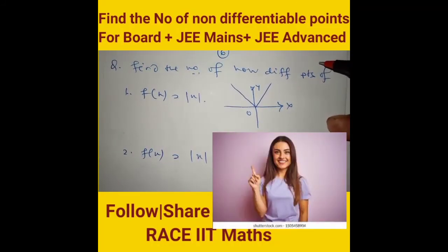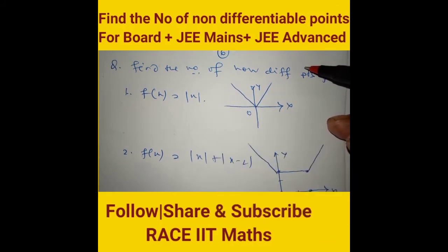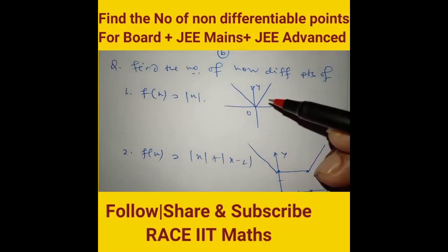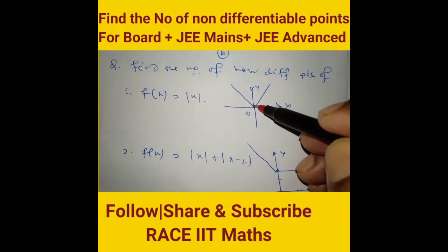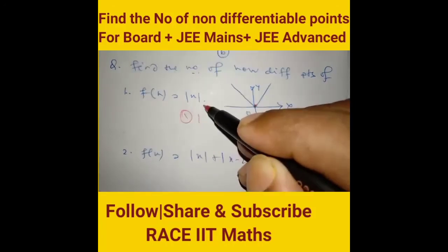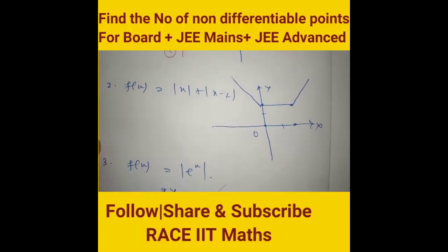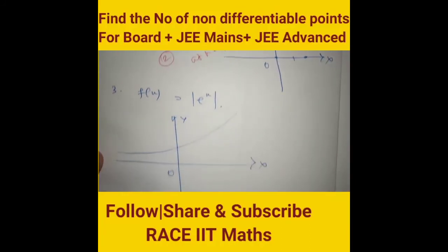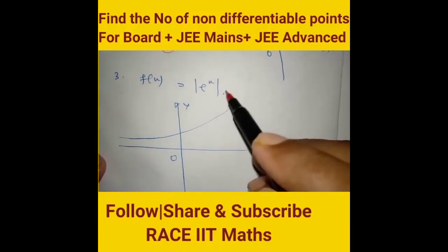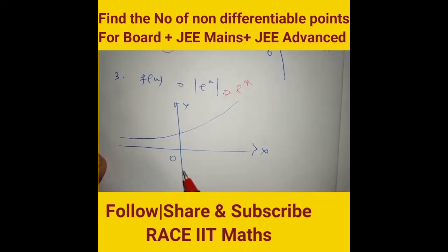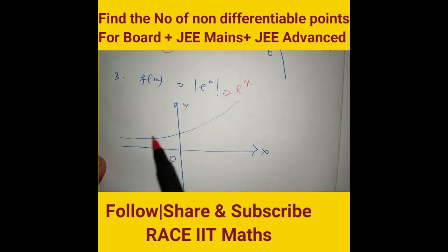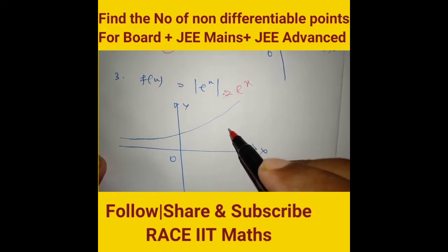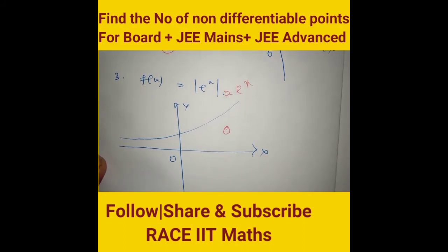Find the number of non-differentiable points. For f(x) = |x|: the graph has a corner at x = 0, so number of non-differentiable points is 1. For f(x) = |x| + |x − 2|: non-differentiable at x = 0 and x = 2, so count is 2. For f(x) = e^x: this is a smooth curve, differentiable everywhere, so number of non-differentiable points is 0.